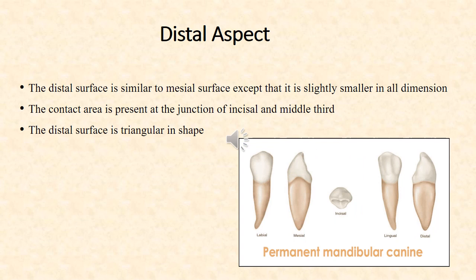Distal aspect: The distal surface is similar to the mesial surface except that it is slightly smaller in all dimensions. The distal contact area is present at the junction of the incisal and middle third. The distal surface, just like the mesial surface, is also triangular in shape.